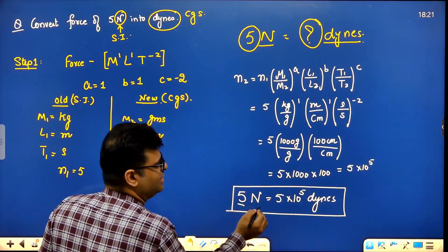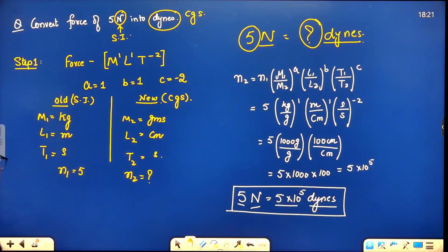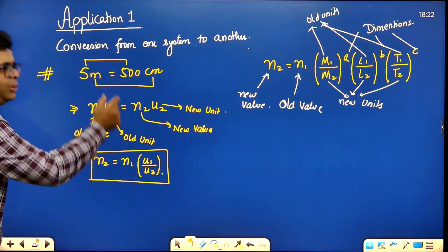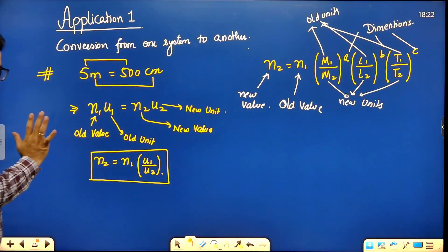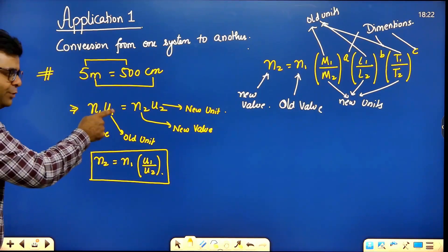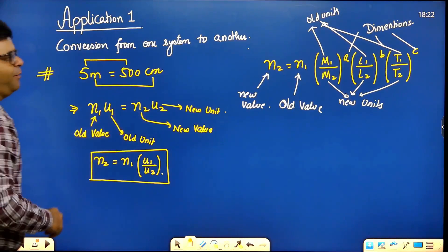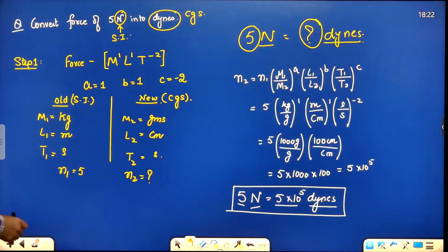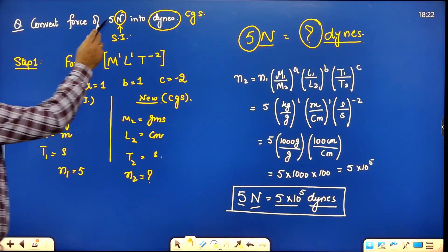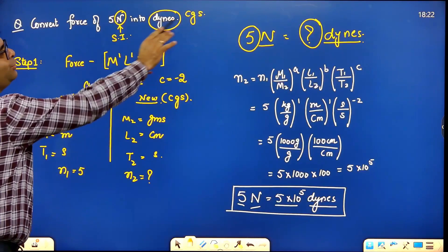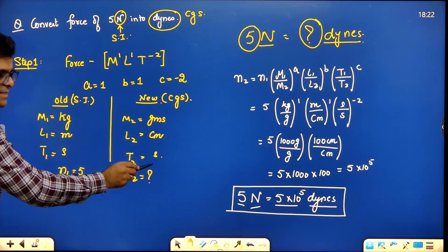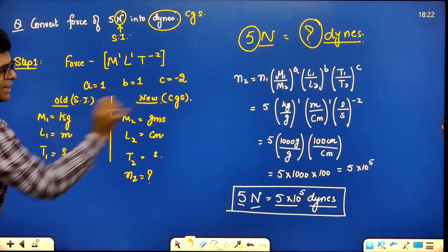This is the application of N₁U₁ = N₂U₂. The logic: old value × old unit = new value × new unit, so new value = old value × (old unit / new unit). Write units in M, L, T form with powers a, b, c. For 5 newton to dynes: old unit is SI, new unit is CGS. Substitute and calculate.